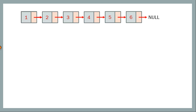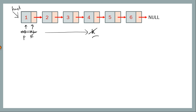In general, if we have k nodes, we keep both pointers — let's call them current and previous — at the head node, and advance current by k minus 1 steps. Then we advance both by one step at a time. When current reaches the last node, we return the value of previous.